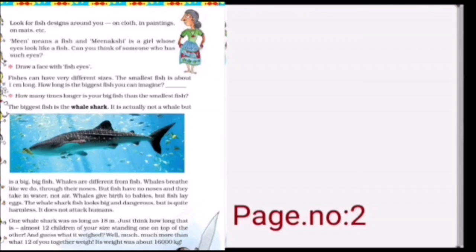Here is one question: How many times longer is your big fish than the smallest fish? If we talk of 2 meters, 2 meters equals 200 centimeters. And the smallest fish was only 1 centimeter. So the larger fish is 200 times larger than the smallest fish. Got it?